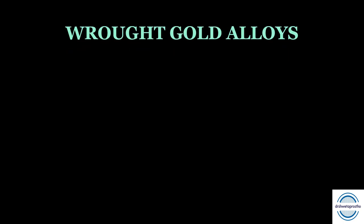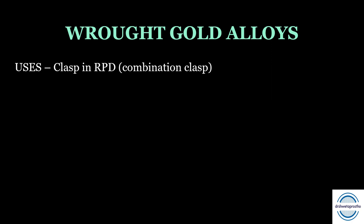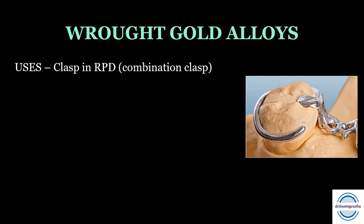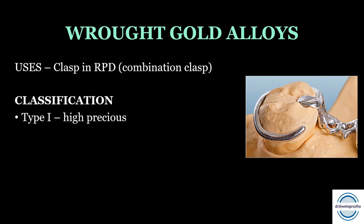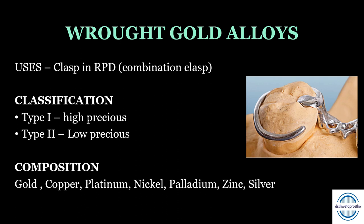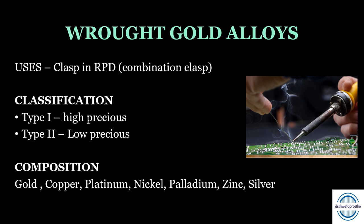First are the wrought gold alloys. Wrought gold alloys are similar to type 4 casting gold alloys and have very good mechanical properties like hardness and tensile strength. They are used for making clasps in RPDs, especially the combination clasp — an MCQ point. There are two types: type 1 high precious metal alloys and type 2 low precious metal alloys. The composition includes gold as the main constituent (25–70%), copper, platinum, nickel, palladium, zinc, and silver. These alloys must be considered during soldering, as prolonged heating at higher temperatures can cause recrystallization and make the wire brittle.